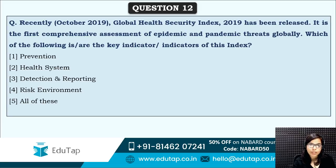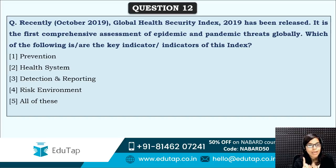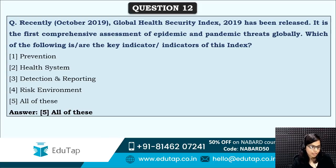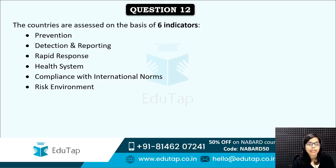Next: the Global Health Security Index has been released — it is the first comprehensive assessment of epidemic and pandemic threats globally. Which of the following are the key indicators of this index? The correct answer is option five — all of these. All options are key indicators. There are six key indicators: prevention, detection and reporting, rapid response, health system, compliance with international norms, and risk environment.